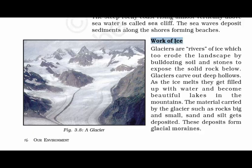Now let's read about the work of ice. Glaciers are rivers of ice. They erode the landscape by bulldozing soil and stones to expose the solid rock below. As the ice melts, the areas get filled up with water and become beautiful lakes in the mountains. The material carried by the glacier, such as rocks big and small, and sand, gets deposited. These deposits are called glacial moraines.